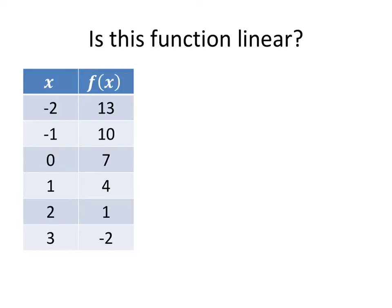So if we want to try to figure out if this is a linear function, what we're going to do is compute the average rate of change between each of the pairs of points in this function. The average rate of change — which would be the slope if this actually turns out to be a linear function — is going to be the change in y divided by the change in x.